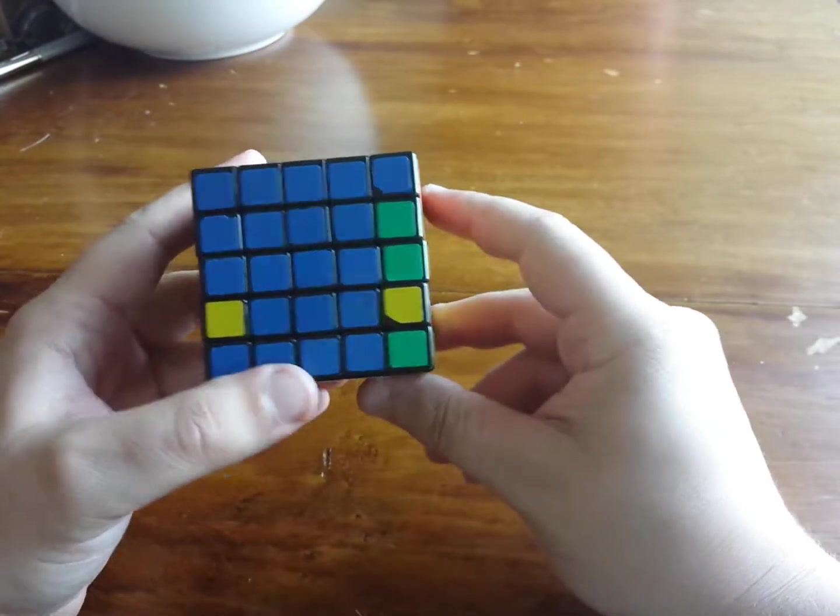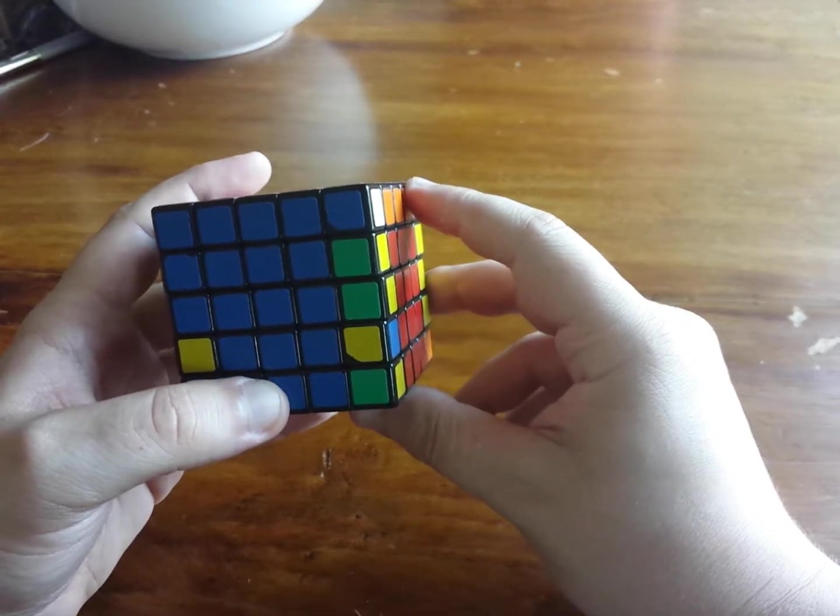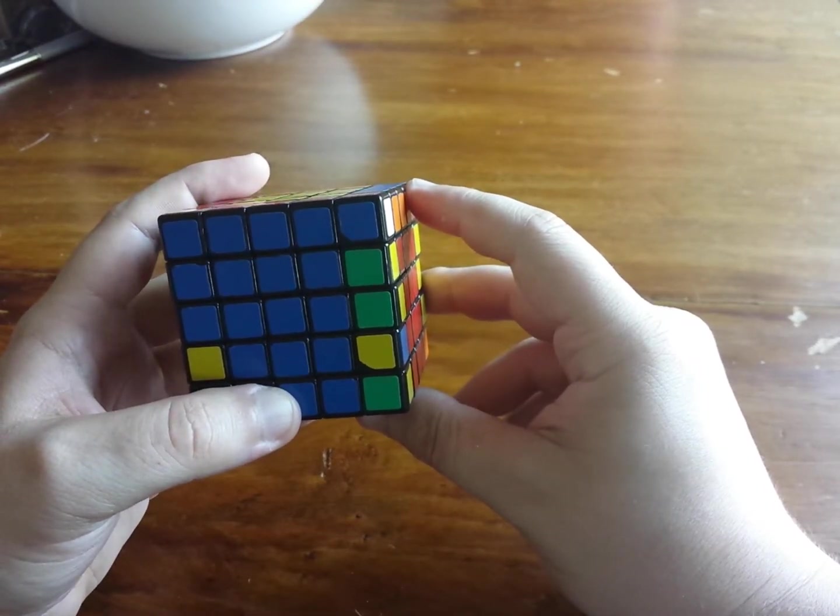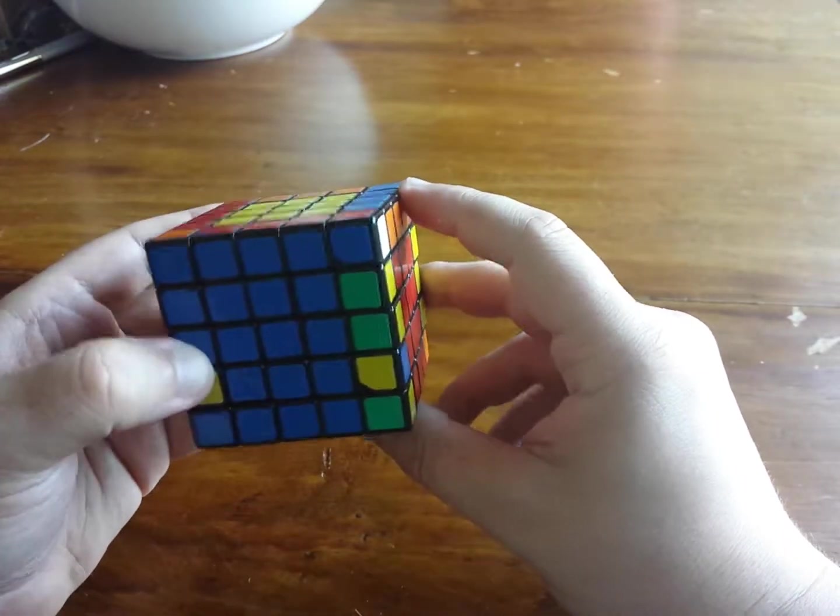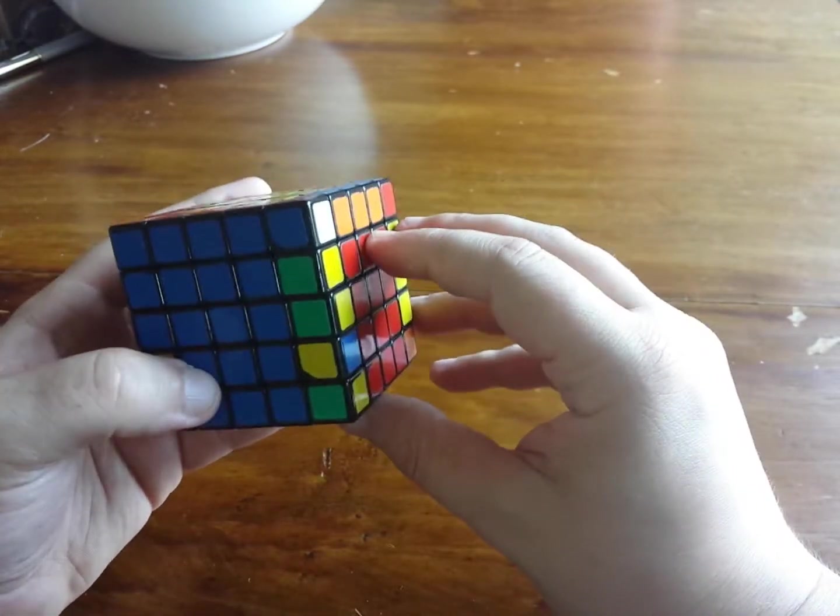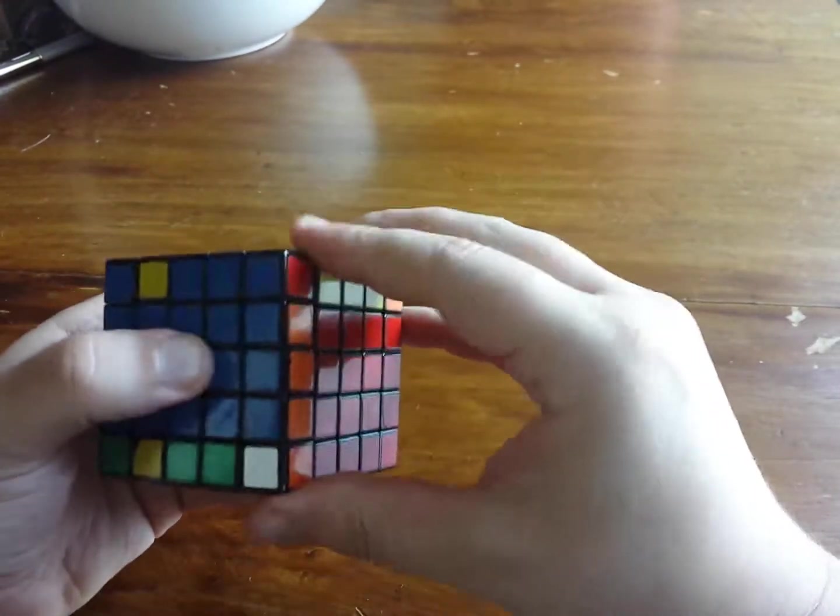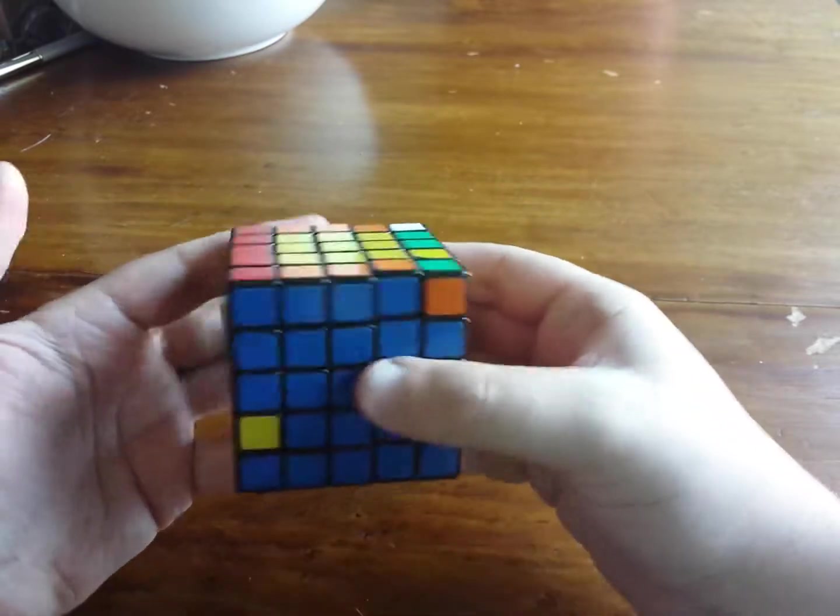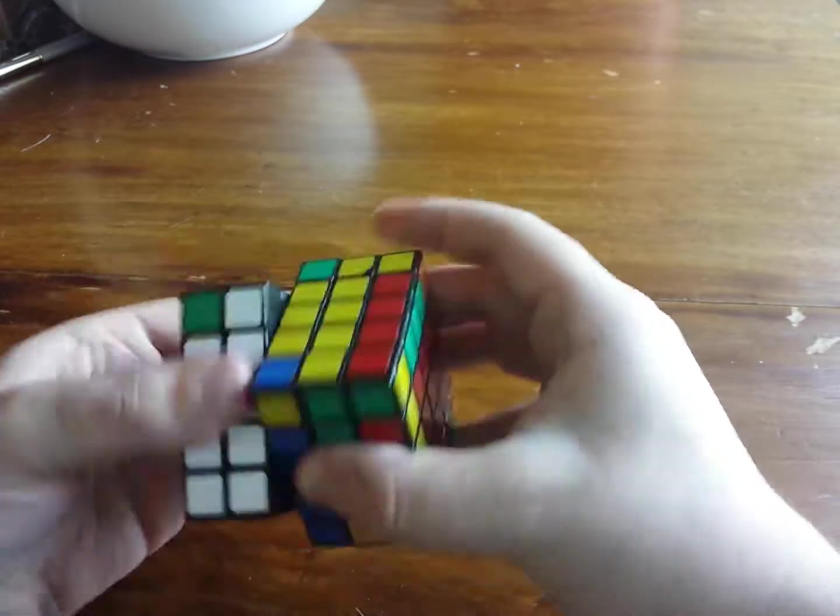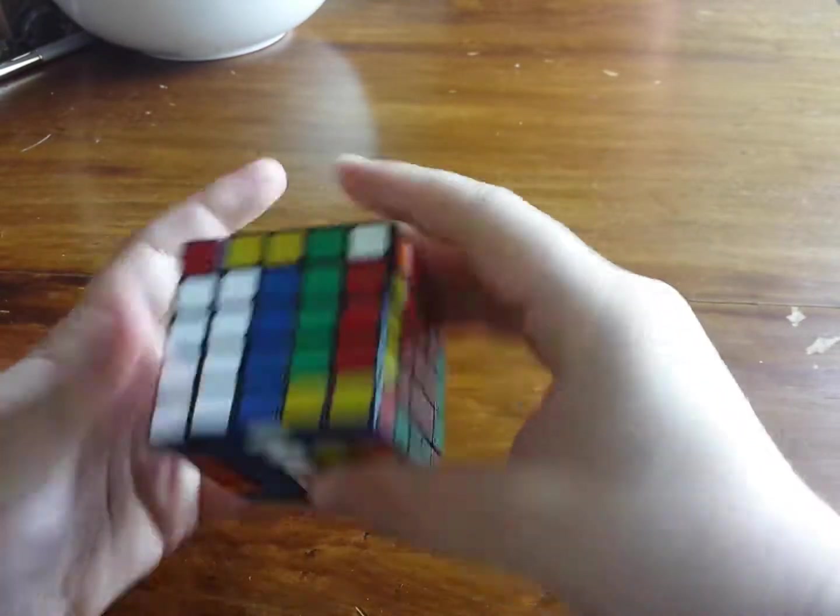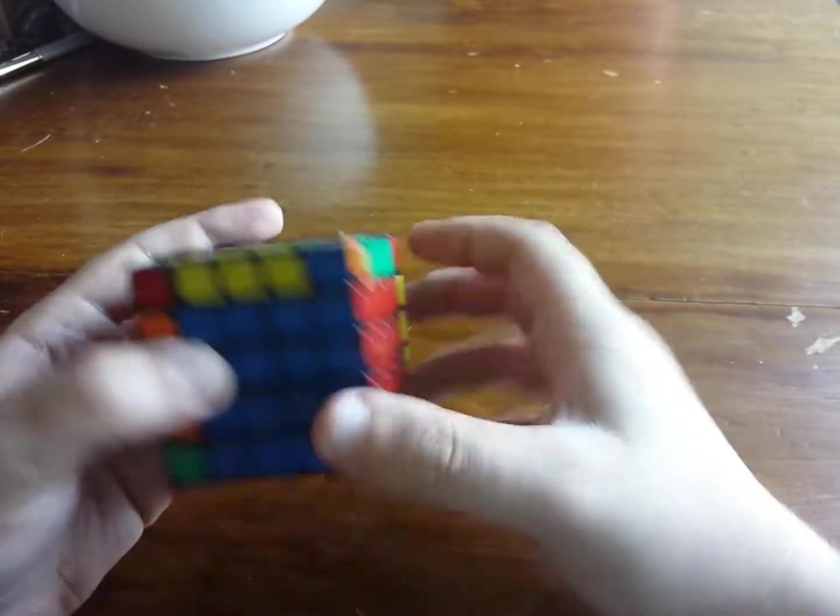For the parity cases I do recommend that you learn some last two edges algs. And everyone should check out Christopher Deasis' site or Meep's site for learning algorithms like this. Cause they are really really useful. So what I am actually going to do. Since this pair is already made for F2L. I am going to insert it. To put this into the top. And then while I am at it I am going to put this into the top as well. And then do the algorithm. Yep. There we go.